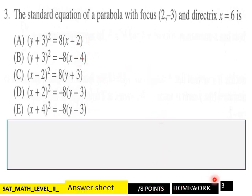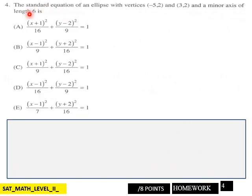Page 4: the standard equation of an ellipse with vertices (-5, 2) and (3, 2), and a minor axis of length 6 is? Which one of these? And we did this in class, so you should, could use your classwork for that. Page 4, eight points.